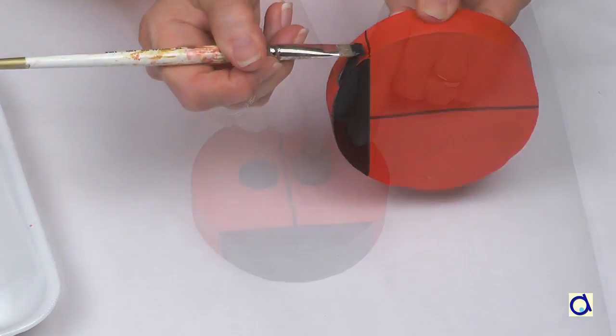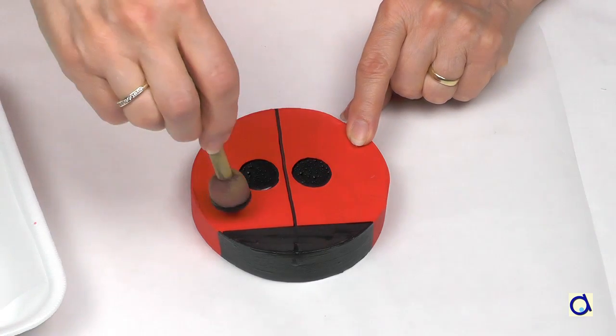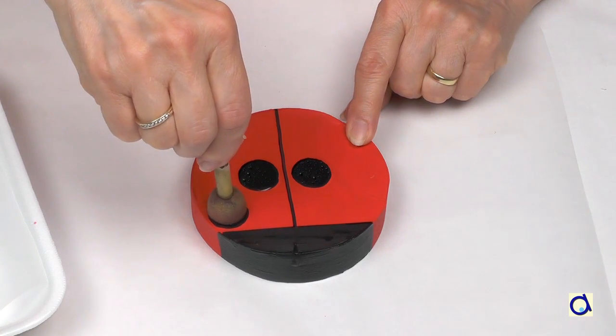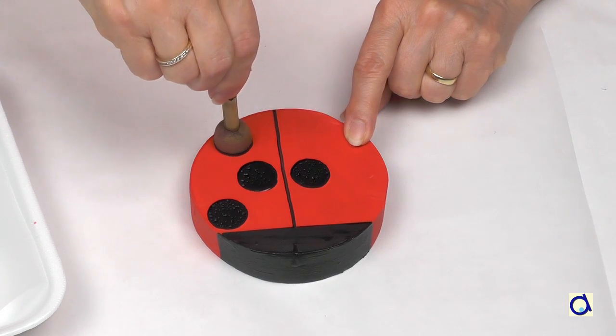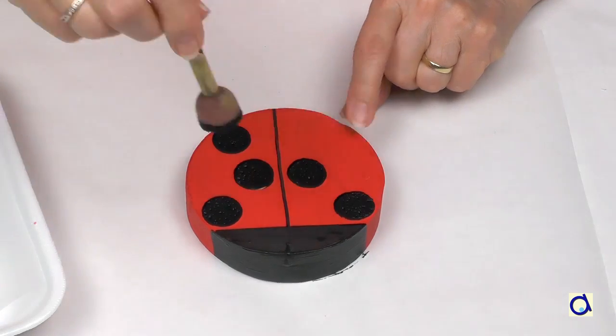Take a round foam brush and paint black spots on the elytra. These foam brushes are very practical for painting circles. If you don't have that kind of brush, you can use corks for example.